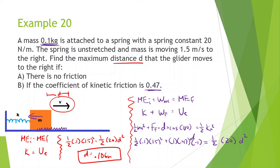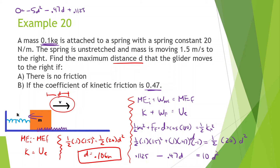Let's simplify. 1.5 squared times 0.1 times 0.5 gives us 0.1125. This is going to be minus 0.47D, and this equals 10D squared. What you should notice at this point is that this is a quadratic formula. Setting it up: 0 equals negative 10D squared minus 0.47D plus 0.1125.